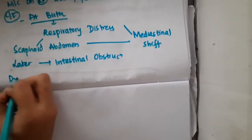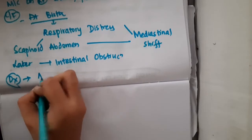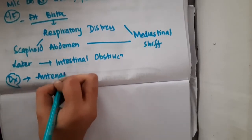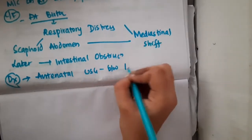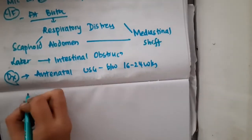For diagnosis, you can do antenatal USG between 16 to 24 weeks of life, or you can do a chest X-ray in the baby.